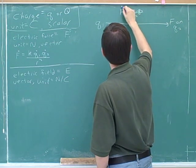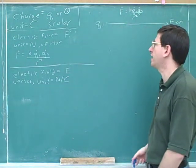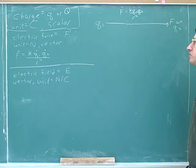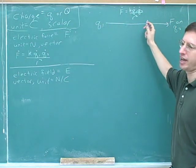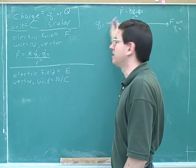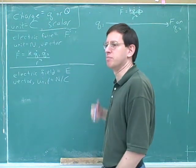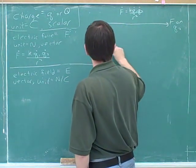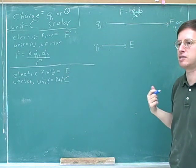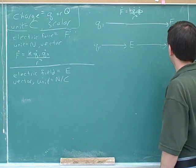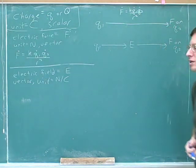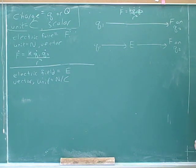So far we've talked about how you can focus on a charge and figure out what force the first charge is exerting on the second charge using this formula. Now we're going to think about this in a different way by introducing a middleman. We're no longer going to think of Q1 directly exerting a force on Q2. Instead, Q1 is going to create an electric field in space, and then the electric field exerts the force.